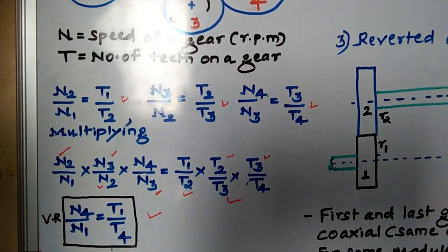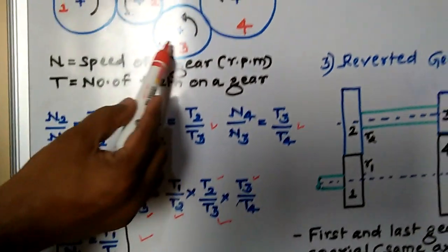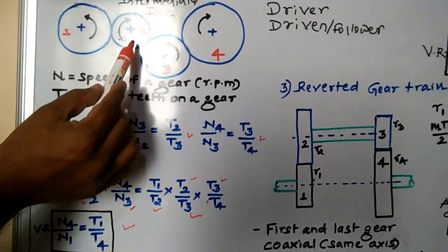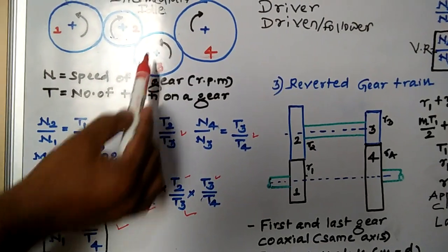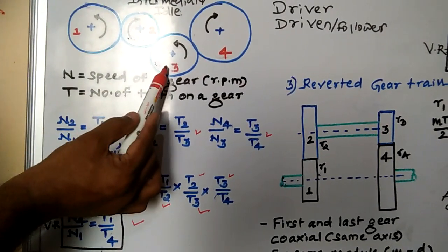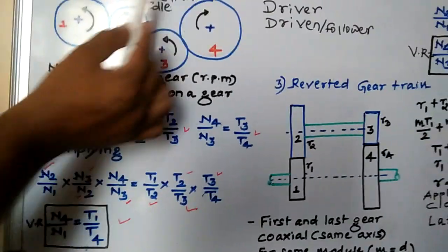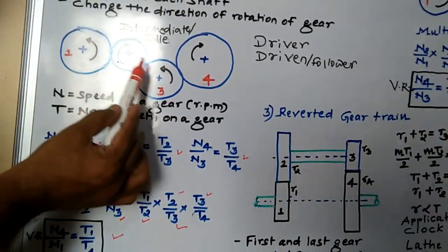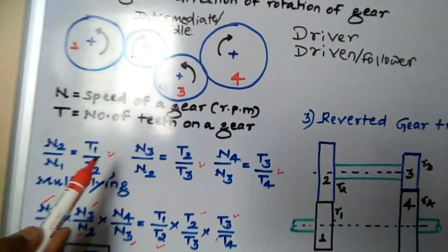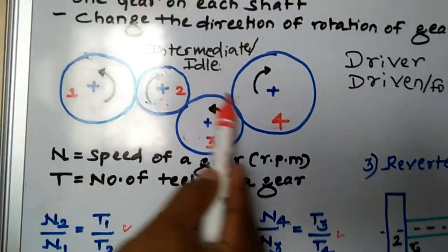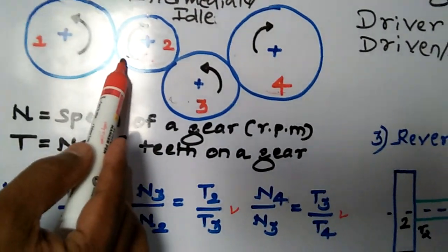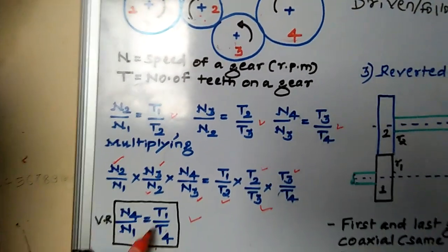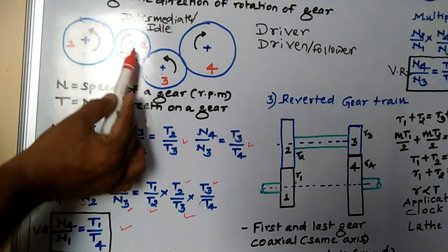From this equation, you can conclude that gear 2 and gear 3 do not appear in the final formula. The number of teeth and speed of gear 2 and gear 3 do not come into the picture. These are called intermediate gears, also known as idler gears. Their purpose is to change the direction of rotation.